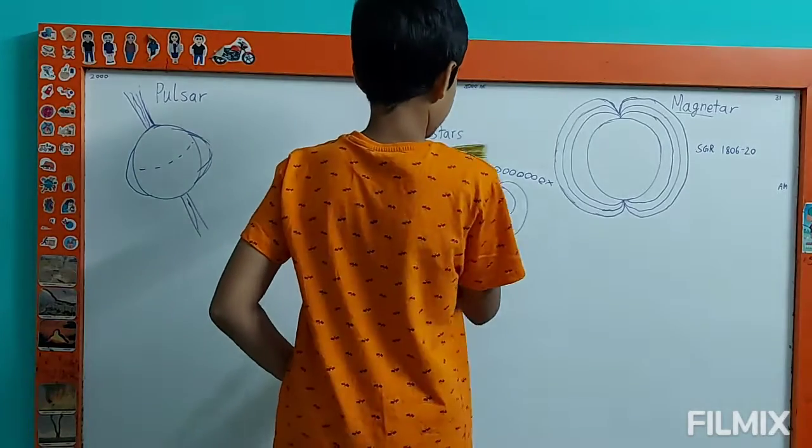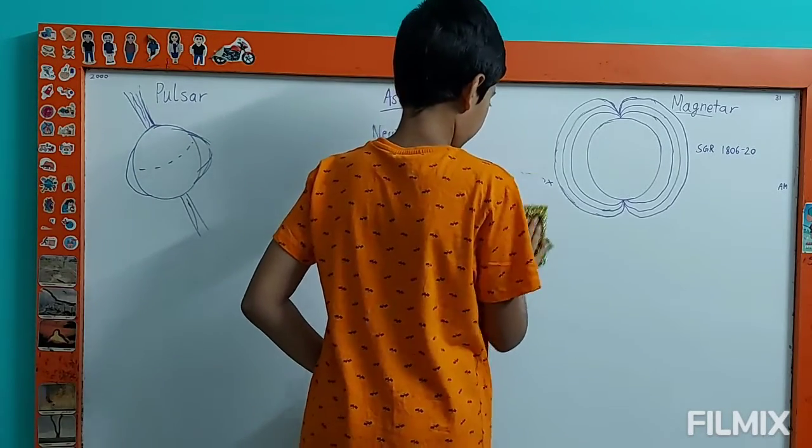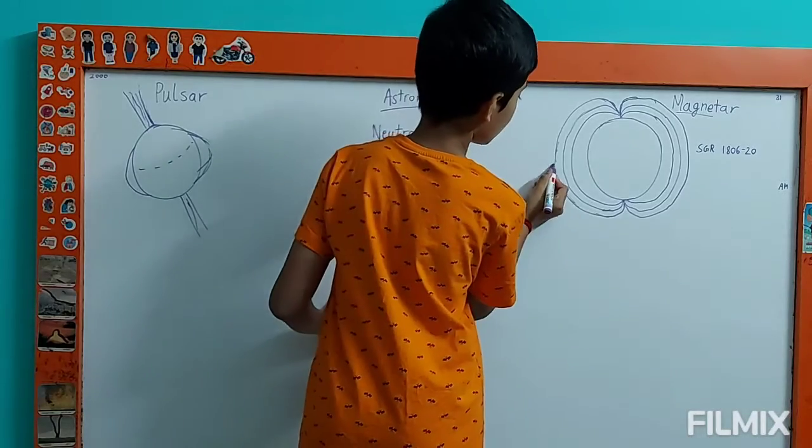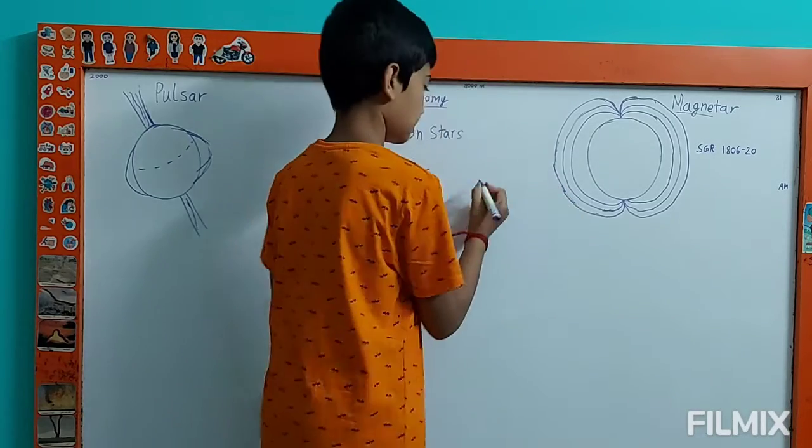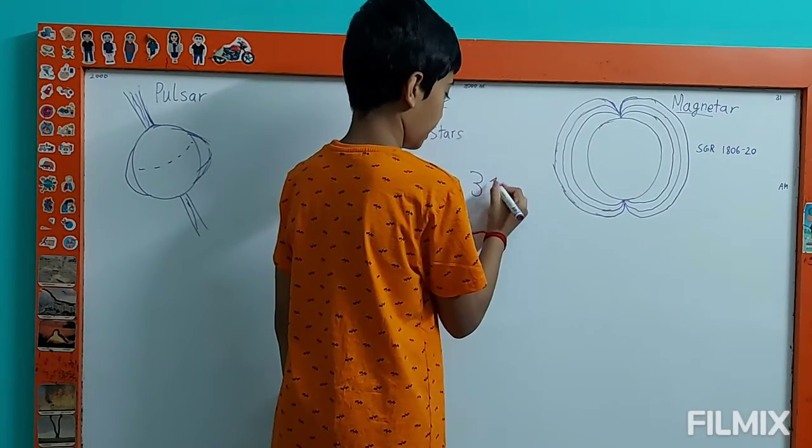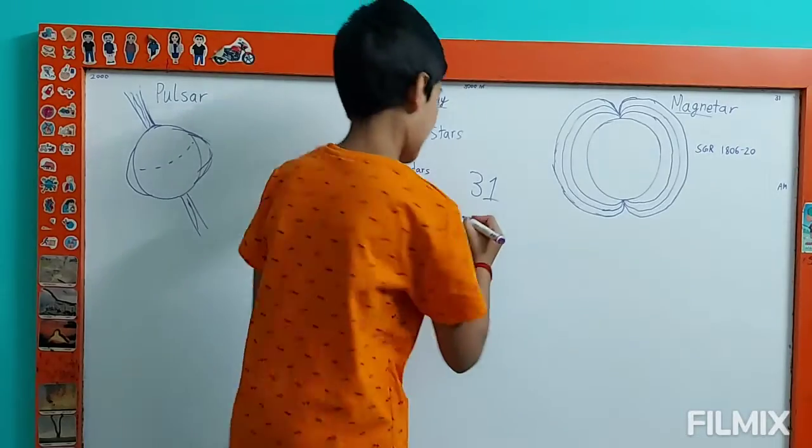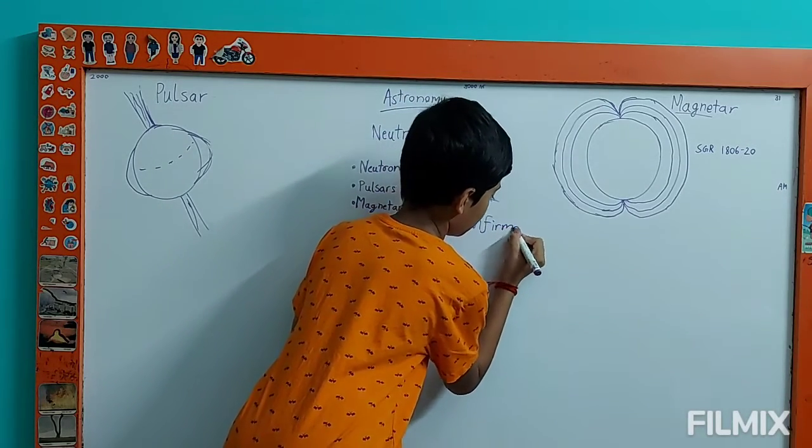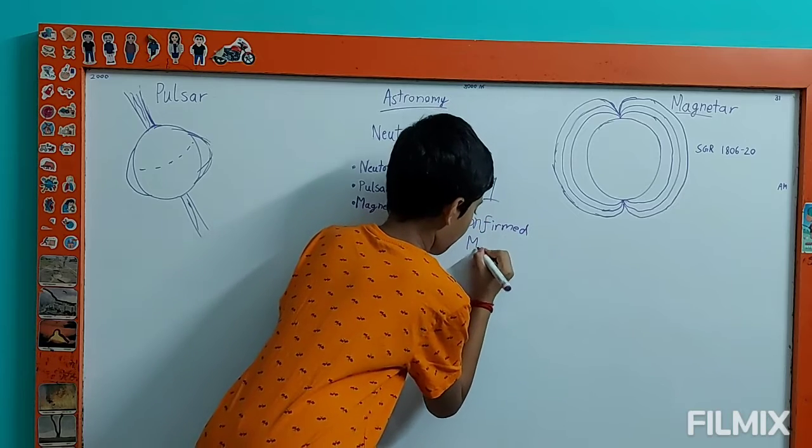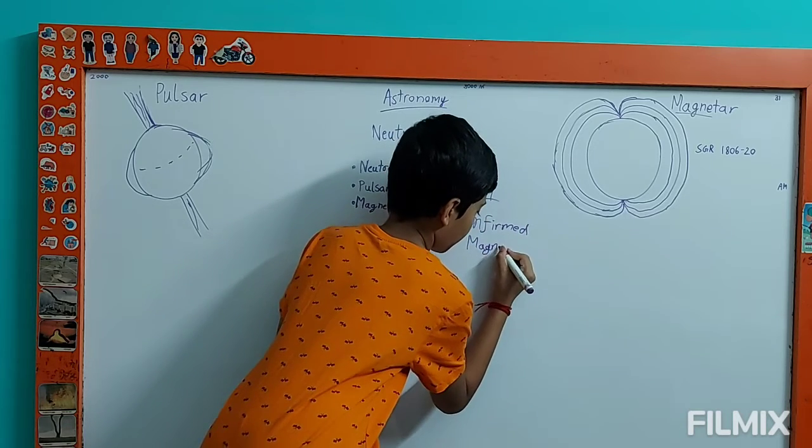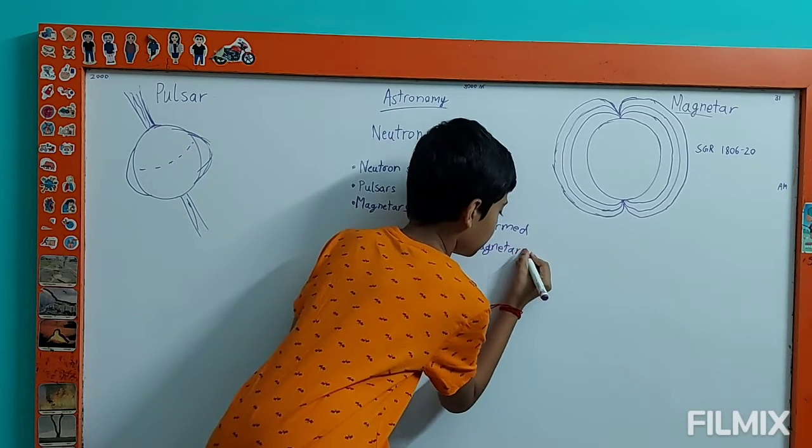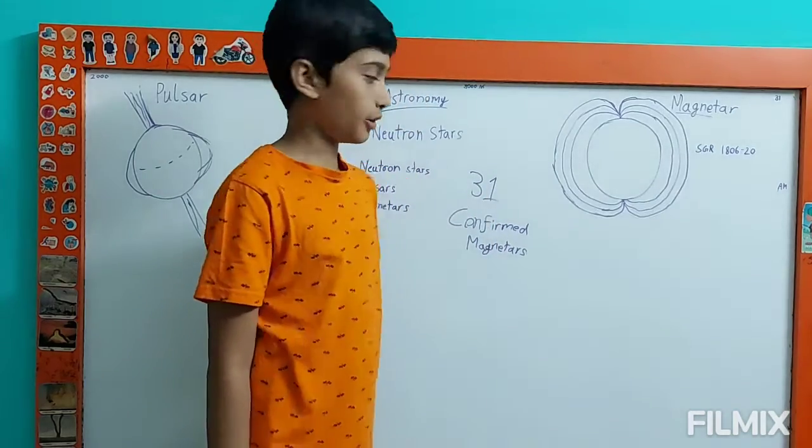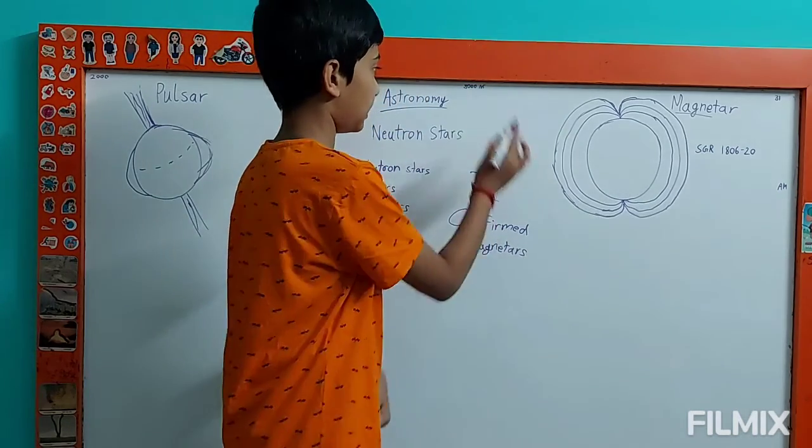Magnetars also, as I said, are very rare. Currently, out of the 3,000 discovered neutron stars, only 31 confirmed magnetars have been discovered.